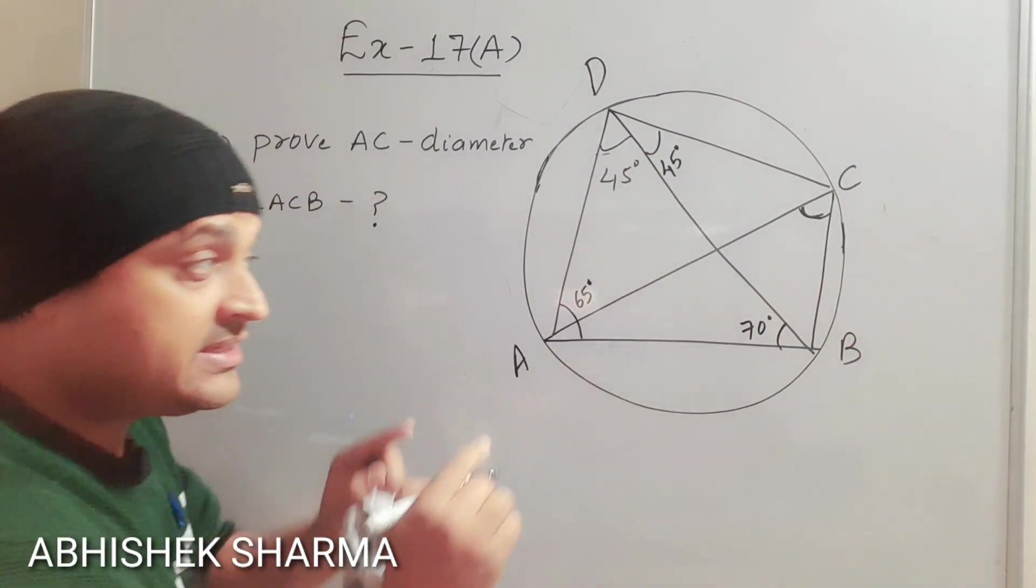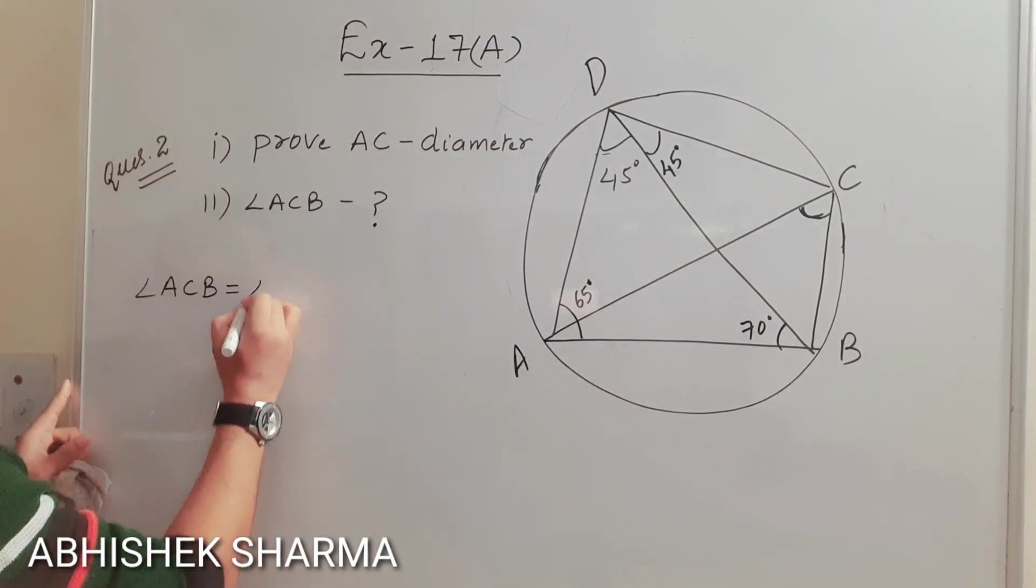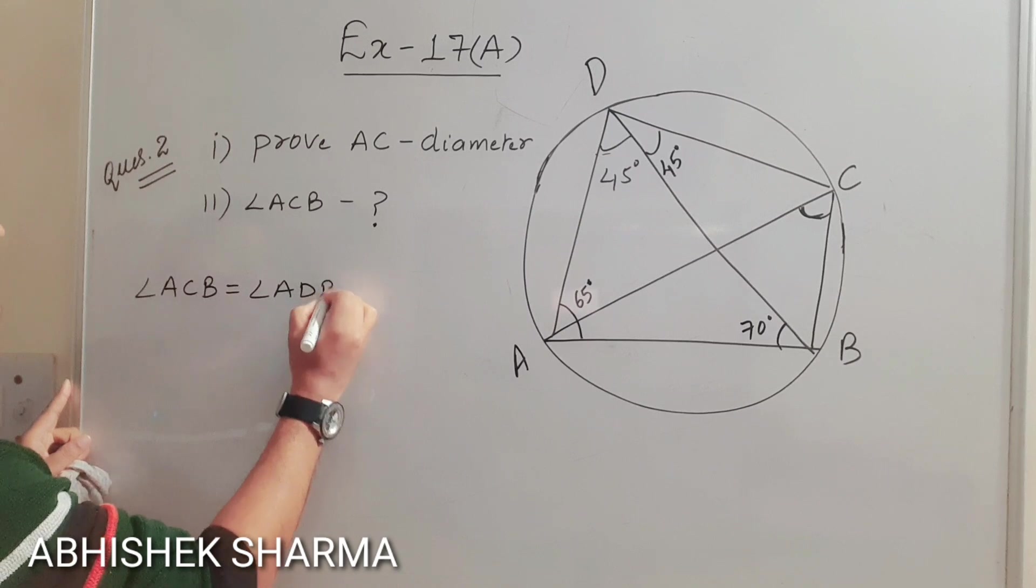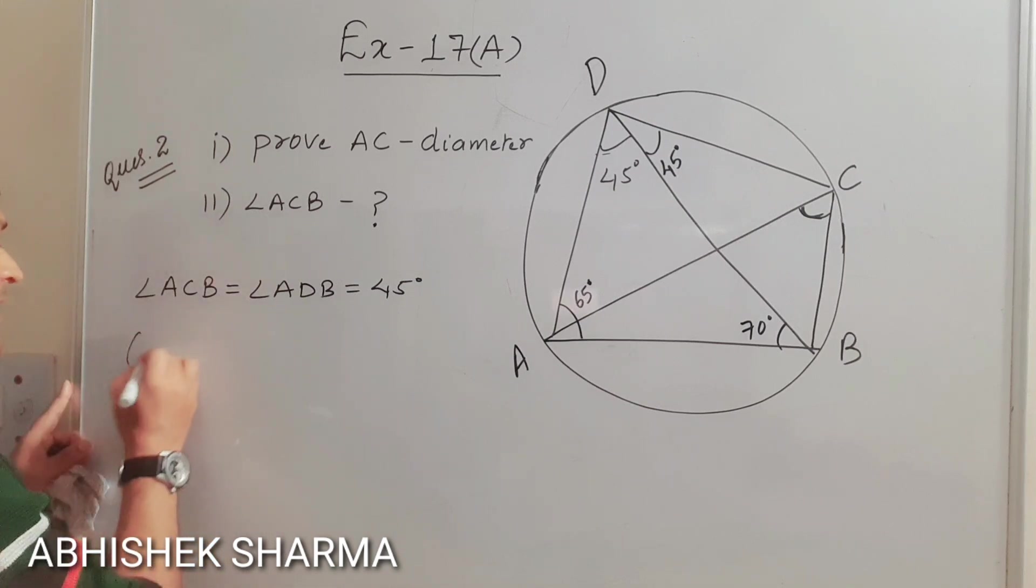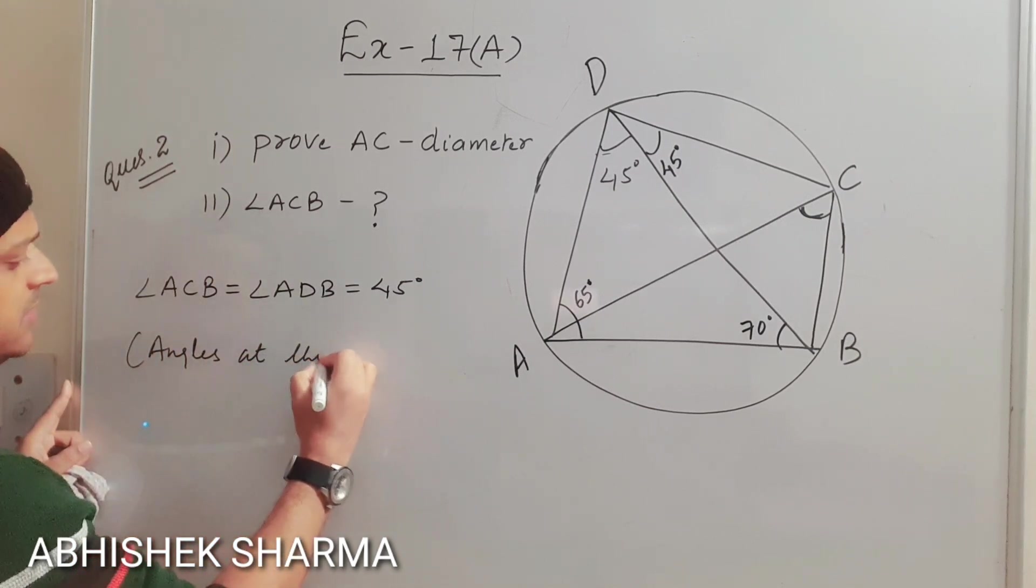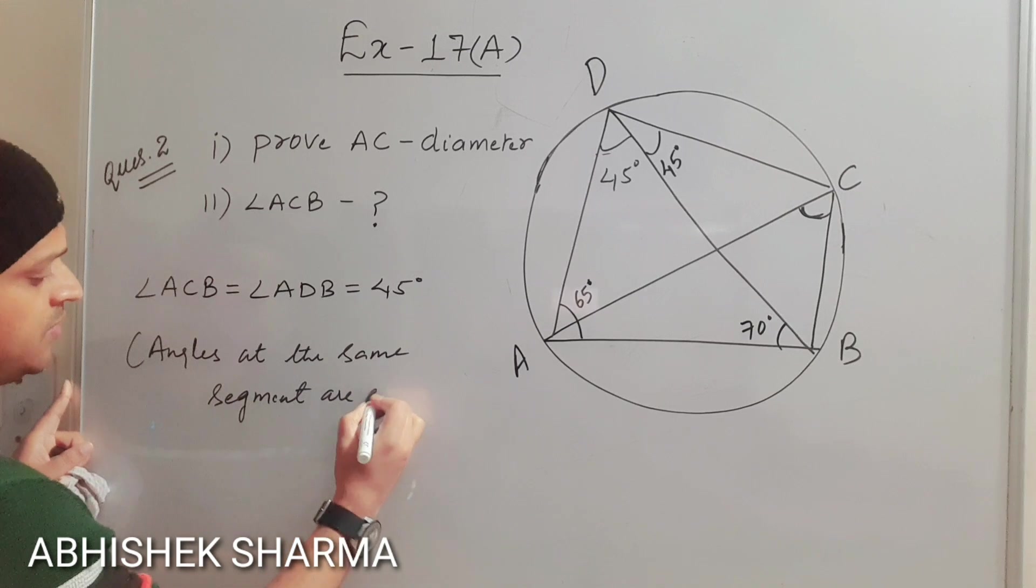Angle at the same segment. So what you can write? Angle ACB is equal to angle ADB. Can you write this thing? Yes. So that is equal to 45 degrees. What is the reason here? That angles at the same segment are equal.